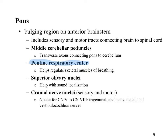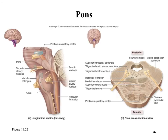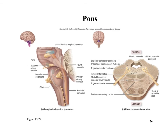The pons contains nuclei for cranial nerves five through eight: trigeminal (five), abducens (six), facial (seven), and vestibulocochlear (eight). The vestibulocochlear nerve is associated with hearing — both the vestibule and the cochlea are associated with the ear. The pons is the first big bump; the medulla is the second.